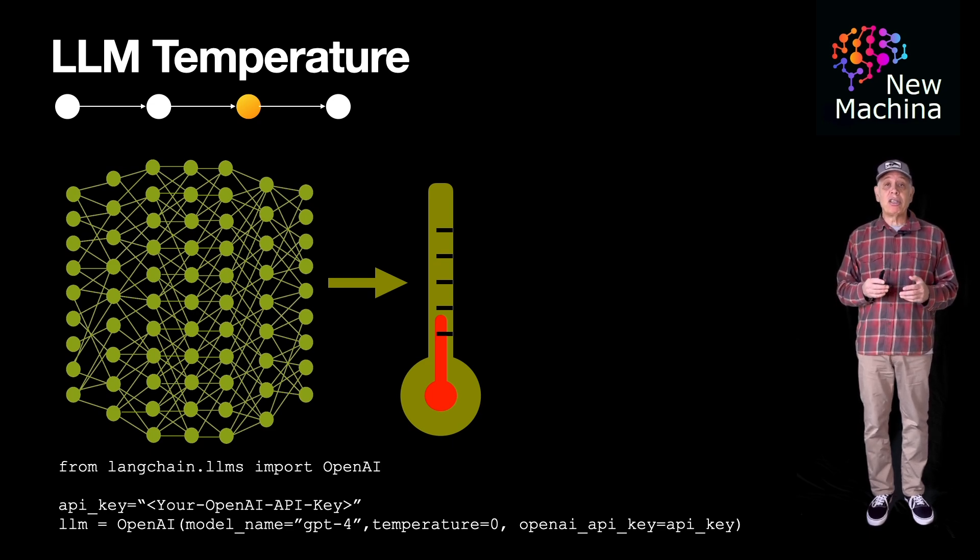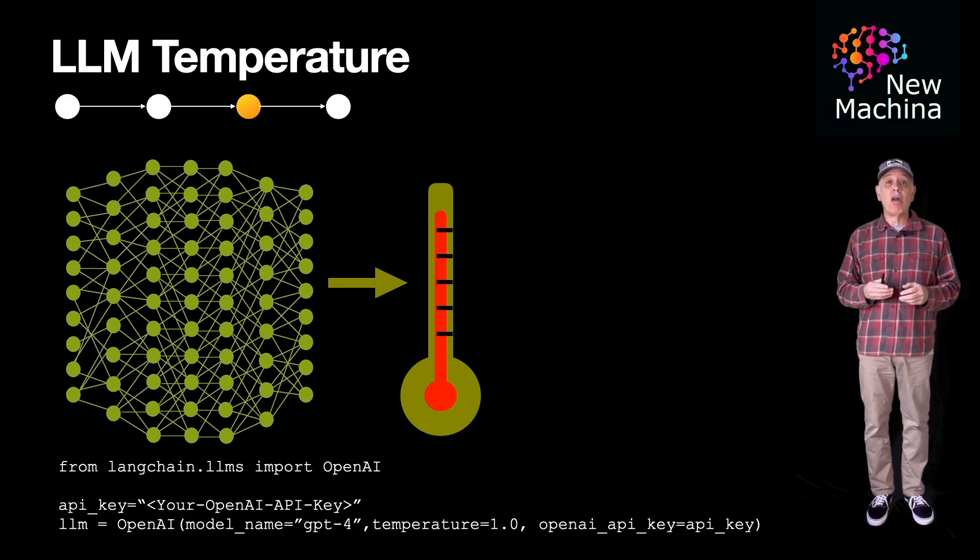You can adjust the temperature parameter high, as we did in this example when we set it to 1, for creative use cases where unpredictability and novelty are more valuable than precision or accuracy.